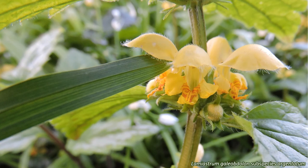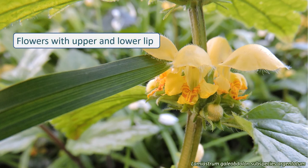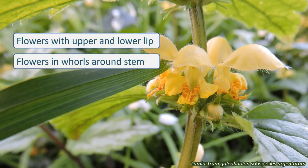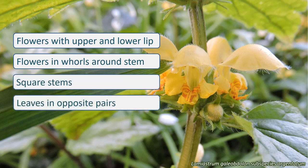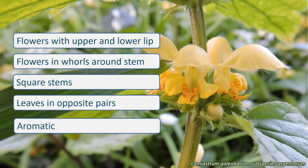So if your plant has tubular flowers with an upper and lower lip, arranged in a whorl around the stem, and that stem is square, with leaves in opposite pairs, you are likely to be looking at a Lamiaceae — especially if it has a strong scent.